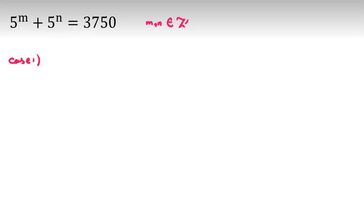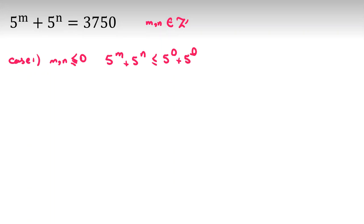Case 1: if both of them are non-positive, so m and n are less than or equal to 0, then 5^m plus 5^n is less than or equal to 5^0 plus 5^0, which is 1 plus 1, which is 2. That is a contradiction.